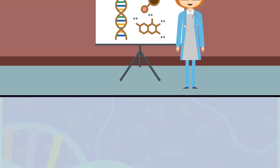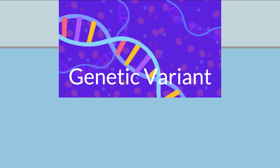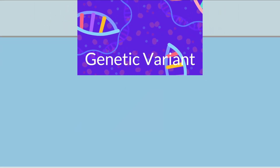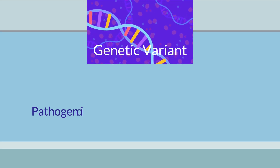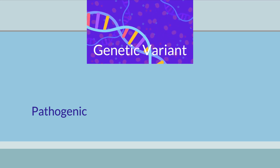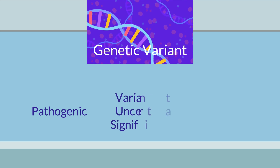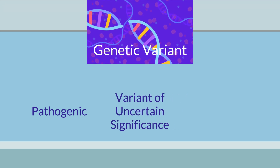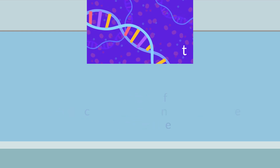What is a genetic variant? A genetic variant is a change in a person's genetic information. Not all genetic variants are harmful. Variants can be pathogenic, meaning they are associated with an increased disease risk; benign, not associated with an increased disease risk; or may have uncertain significance, where the variant's clinical significance is currently not known nor used to inform medical decisions.